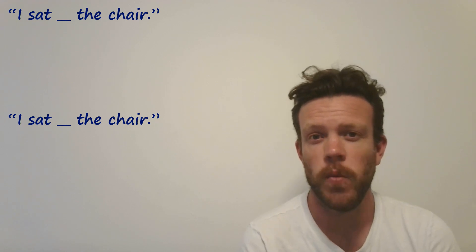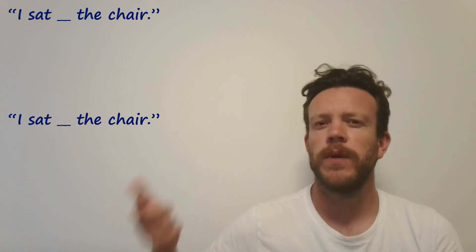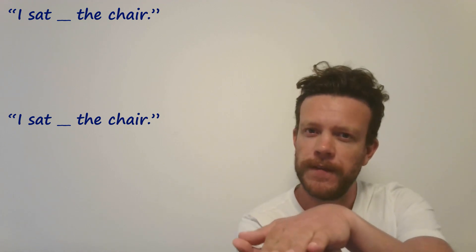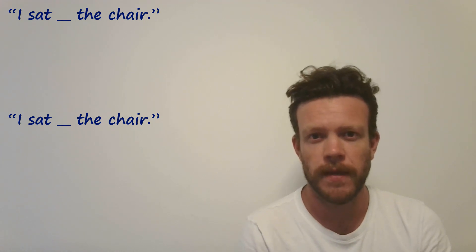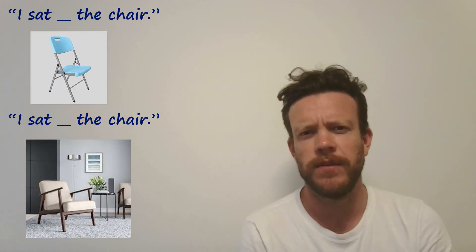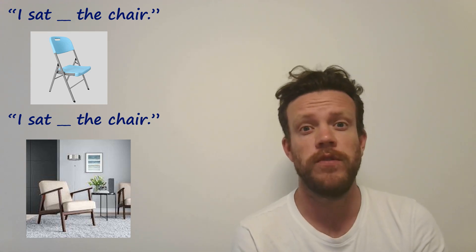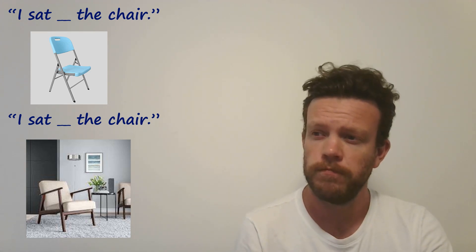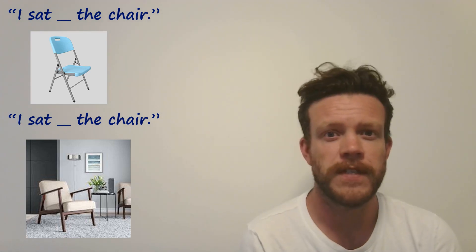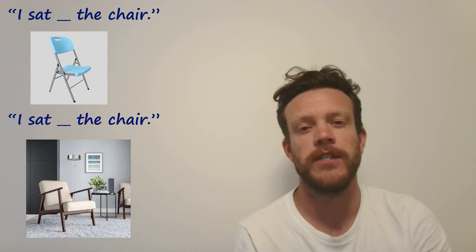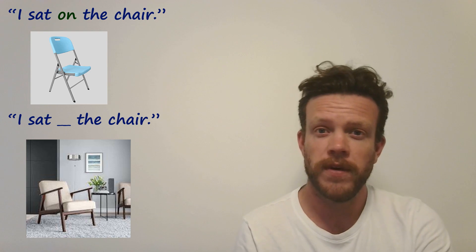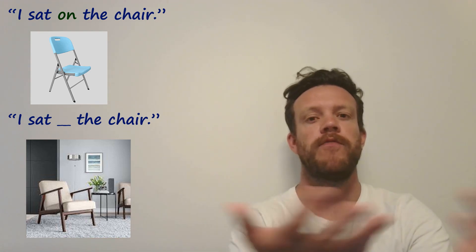Sometimes it's a little more complicated, for example with the word chair. Going back to a couple of videos ago: 'on' for the surface, 'in' for when you are enclosed or surrounded by something. Which of these chairs do you think you would sit in, and which would you sit on? Well done. If you said the first one is flat, so you're talking about the surface, you sit on a chair like this. Whereas the second one, with arms, it surrounds you — you're going to sit in this chair.